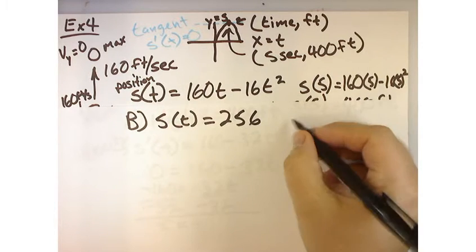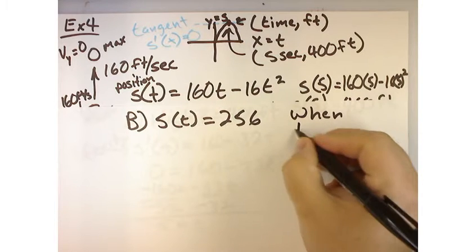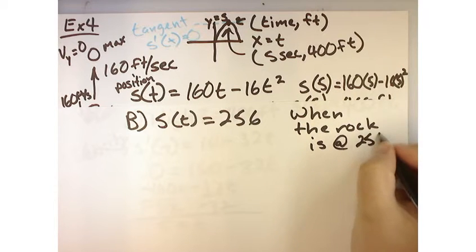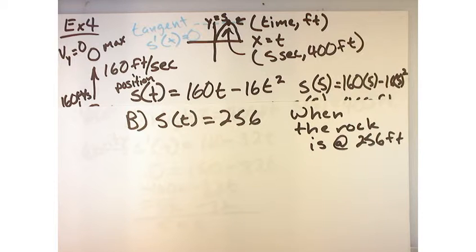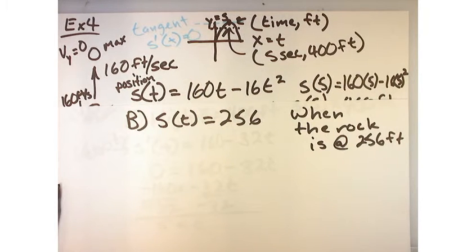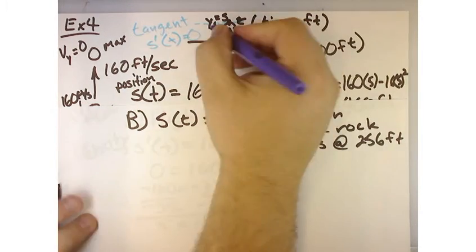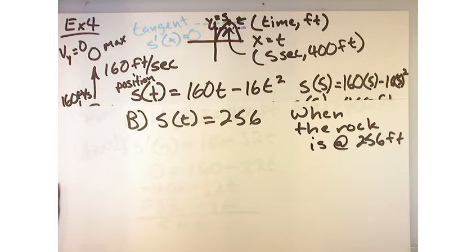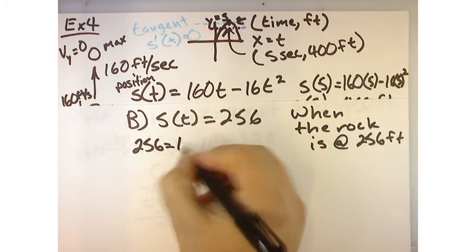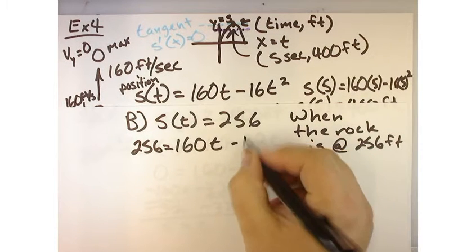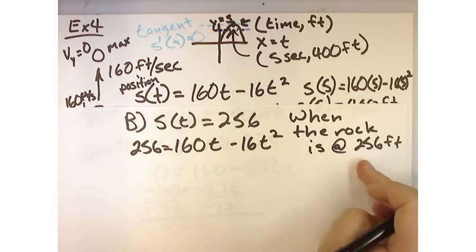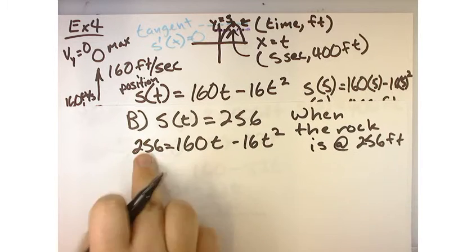Now, why do I need to know that? Because I want to know when the rock is at 256 feet. Now, it's a parabola and so, this graph is the position over time and so, what I'm looking for is when this graph is equal to 256 feet. Well, I'm going to say 256 is equal to 160t minus 16t squared because that's the equation of position and I am curious at what time that position is going to be 256.